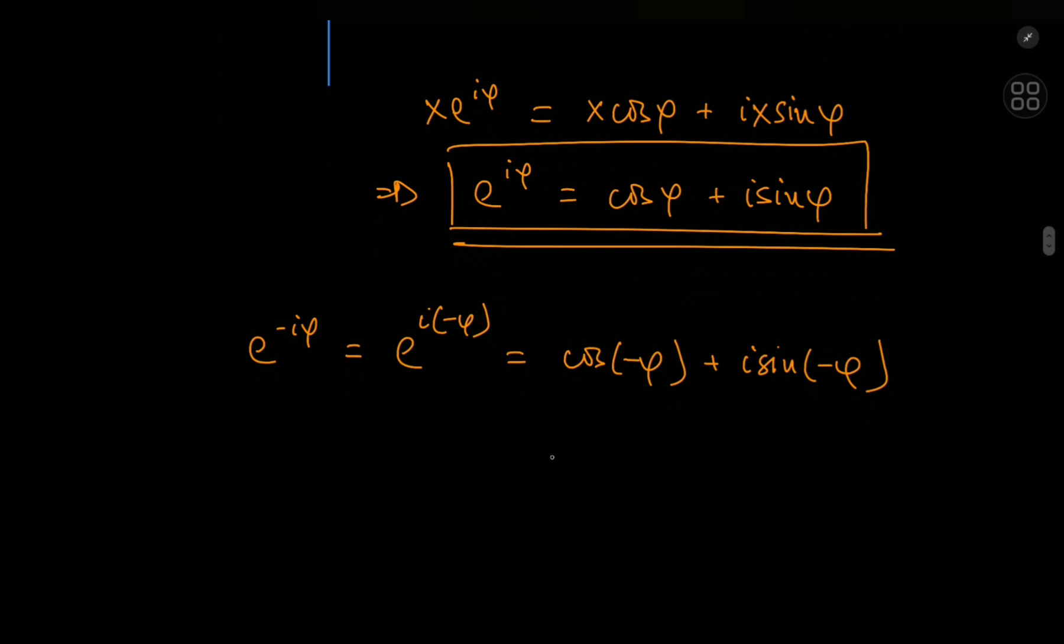Now cosine being an even function just spits out the cosine of phi, whereas the sine is an odd function. It takes the negative sine outside, so i times the sine of phi, that is e to the negative i phi. And this can be considered as a rotation in the clockwise sense.